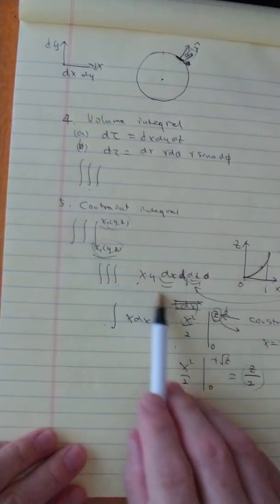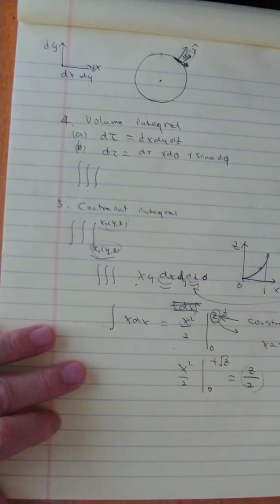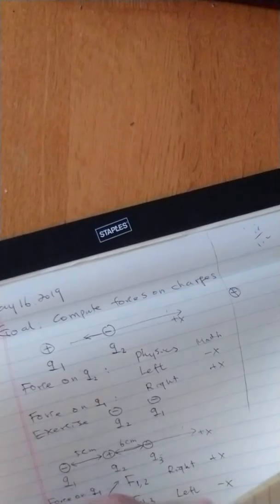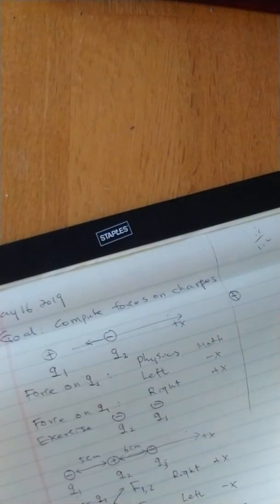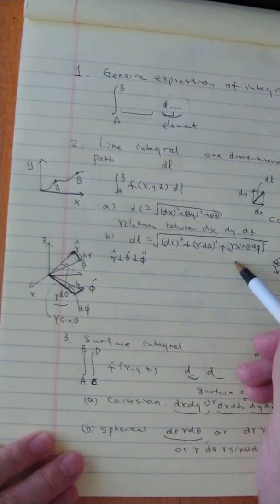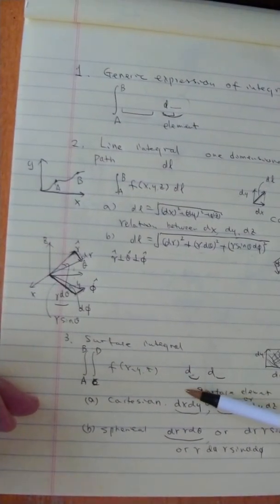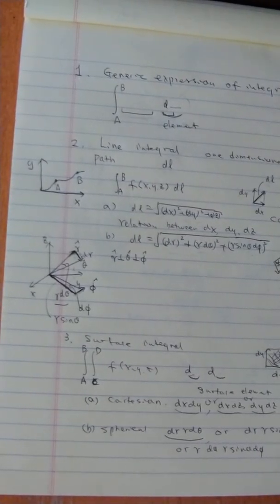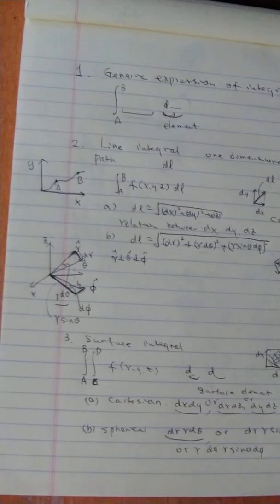You cannot arbitrarily choose limits from 0 to 1 — it's constrained. You have to ensure that the constraint is reflected in the limits. For surface and volume integrals, you do not substitute the constraint directly into the integrand — that's incorrect. The constraint goes into the limits. For line integrals, by contrast, you do substitute the relation directly into the integrand. I hope this explains things well, and I hope you enjoyed it.